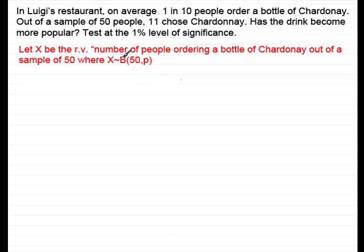Where x is distributed binomially, n being the number of trials, which is fifty. And the probability, p, of someone ordering a bottle of Chardonnay, let's say, is here as p.